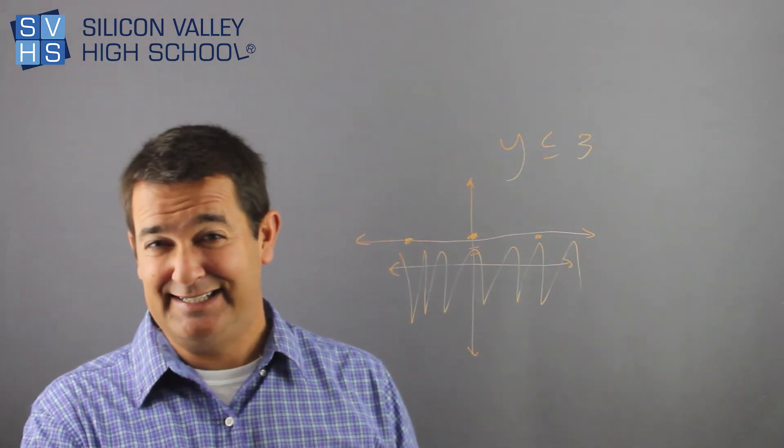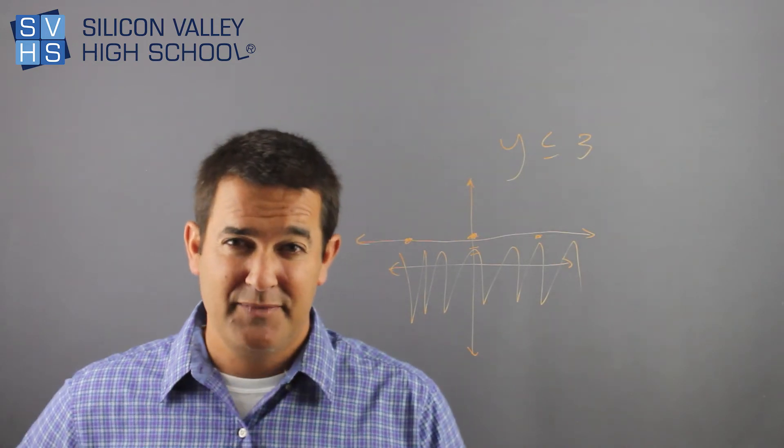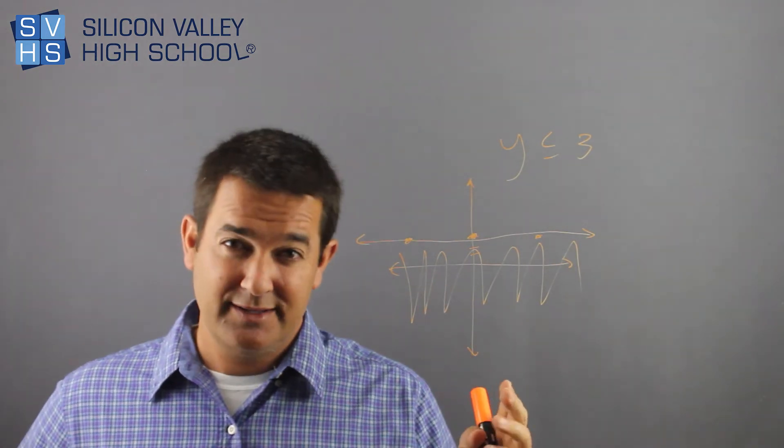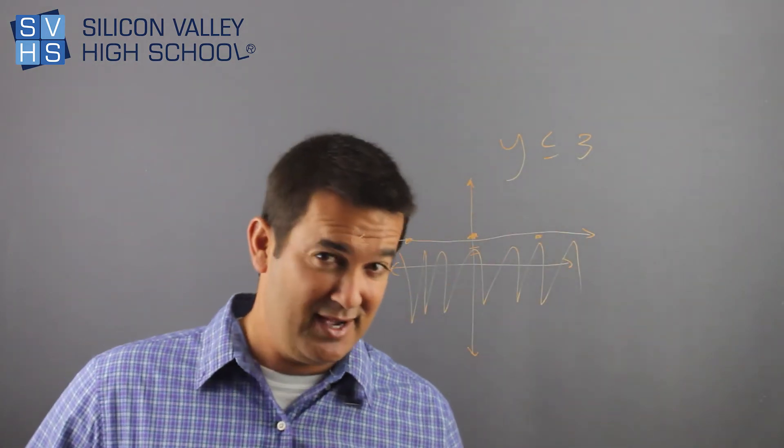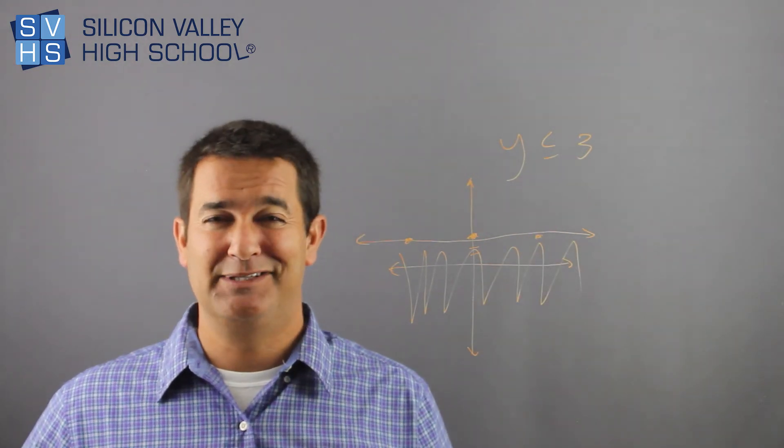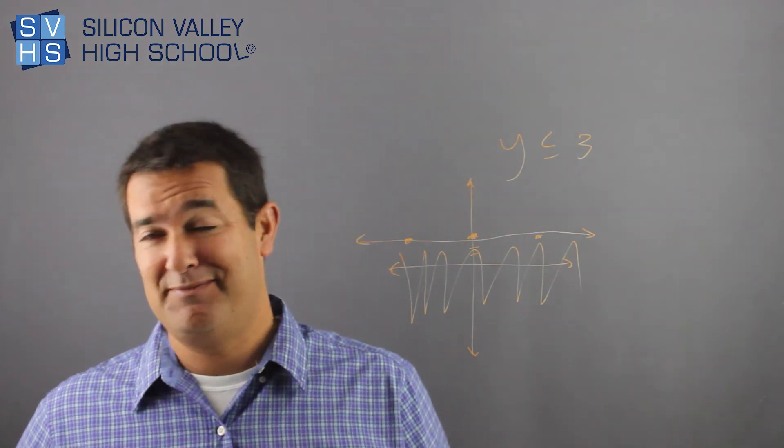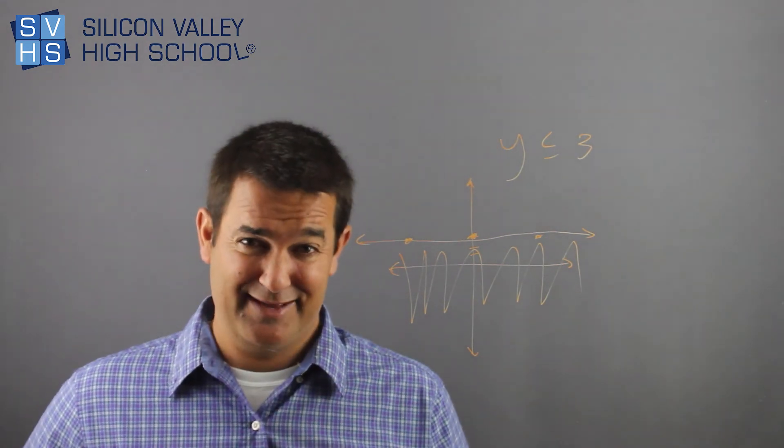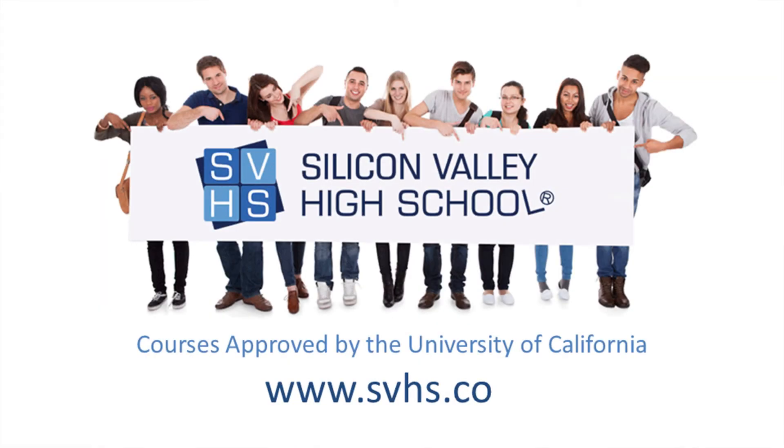I think graphing inequalities is actually easy. Graph the line, beware if it's dotted or solid, and then shade one side or the other based on either checking a point or by just kind of common sensing it out like I do, which is probably bad advice, but we're tight and I'll give you that advice. So that's it. And remember, if you're having a hard time with this class at your local high school, you can take this online at Silicon Valley High School, pass it there and the credits will be transferred back to you.